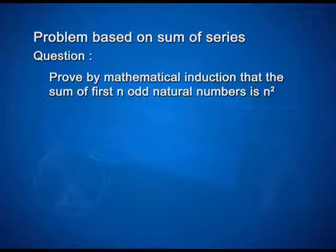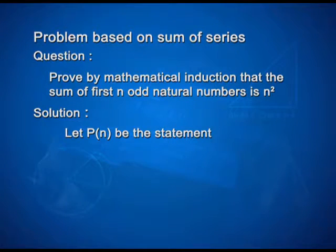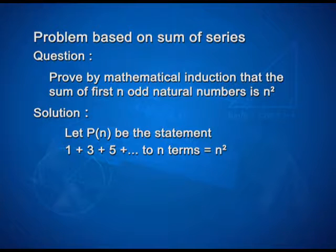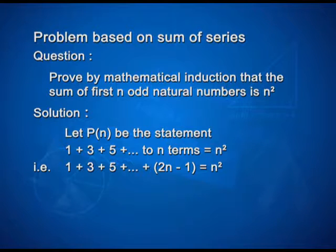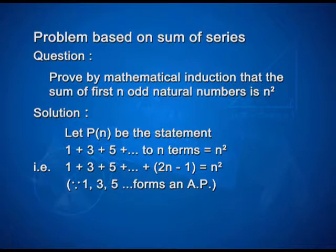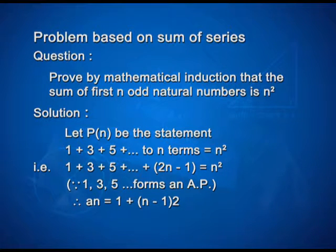Now, let us see how we can solve the mathematical statement: the sum of first n odd natural numbers is n squared. Let P(n) be the statement 1 + 3 + 5 + ... + (2n−1) = n². The given numbers form an AP with first term 1 and common difference 2, so the nth term is 1 + (n−1)×2, which simplifies to 2n−1.